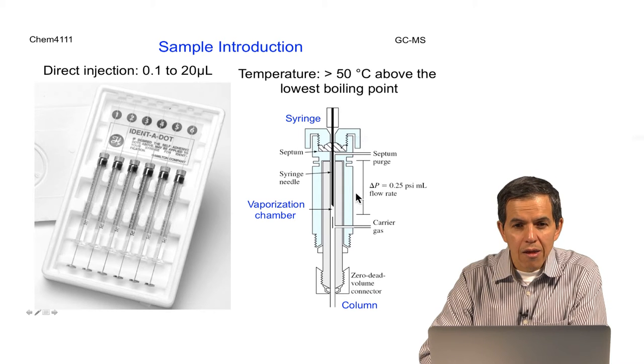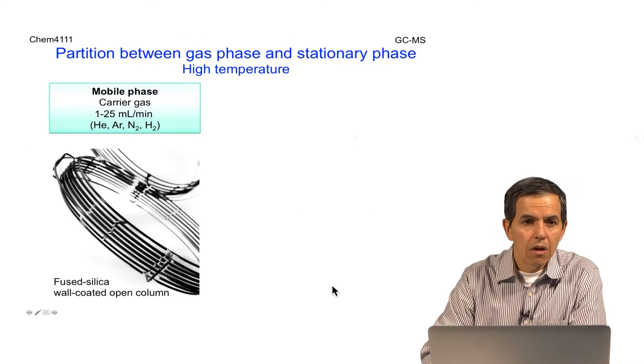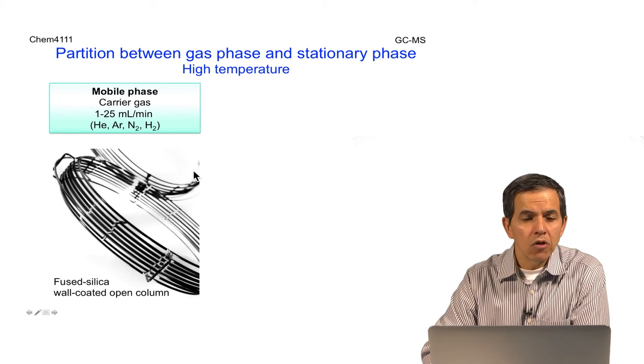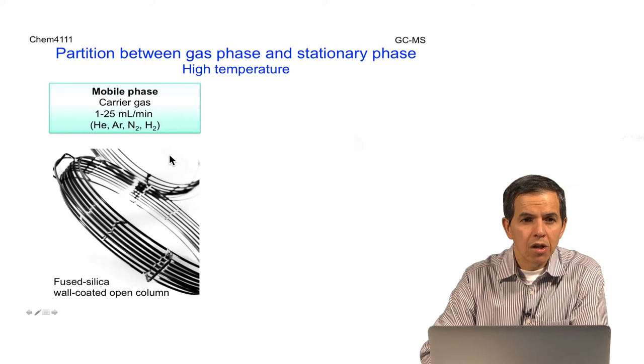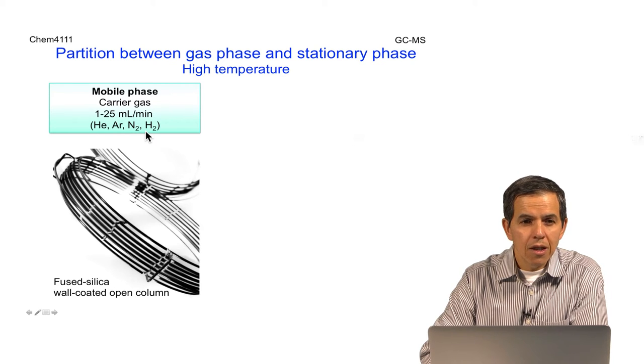The technique consists of transferring the analyte onto a column. In the column, there are two main components. The first component is a mobile phase, which is a gas. Helium, argon, nitrogen, and hydrogen are common gases used. This carrier gas has the ability to carry the volatile compounds throughout the column that could vary from one to several meters in length.